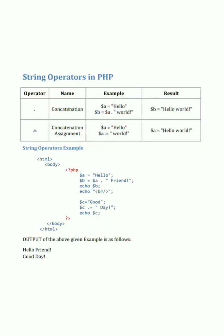Next are string operators in PHP. As I already told you earlier, string operators are of two types in PHP: the first one is the concatenation operator, and the second one is the concatenation assignment operator.